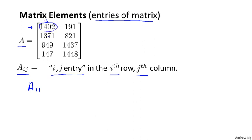A_11 is going to refer to the entry in the first row and the first column. So A_11 is going to be equal to 1402.